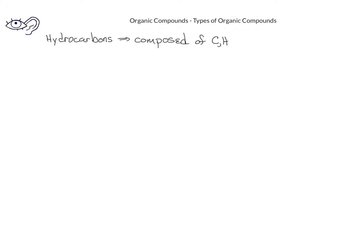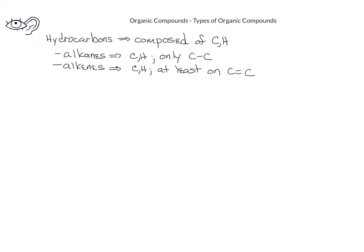Within the class of hydrocarbons, we can divide these into three different kinds. The alkanes are composed of carbon and hydrogen and possess only carbon-carbon single bonds. The alkenes are also only carbon and hydrogen, but with the difference that there is at least one carbon-carbon double bond. An alkyne is a hydrocarbon as well, but there is at least one carbon-carbon triple bond present in the carbon chain.